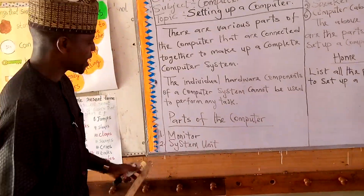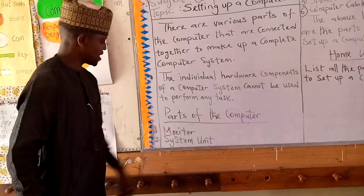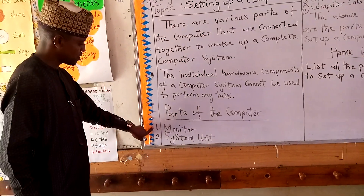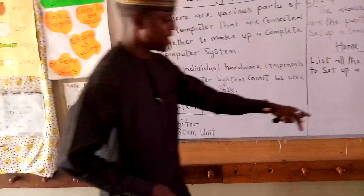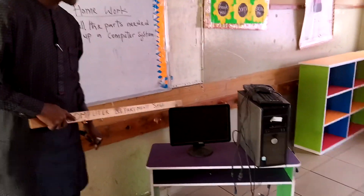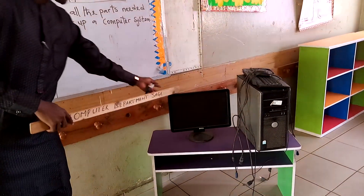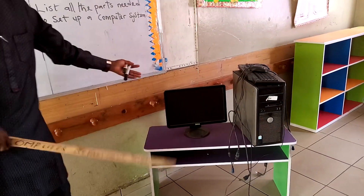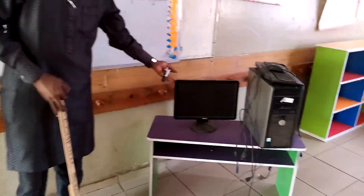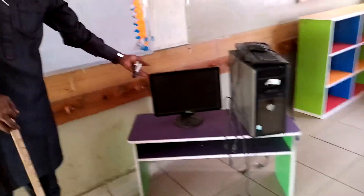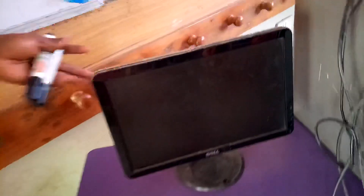Let's now look at the parts of the computer. First, we have the monitor. This is what we call the monitor — it actually looks like a television that we watch in our houses. This is the computer monitor.